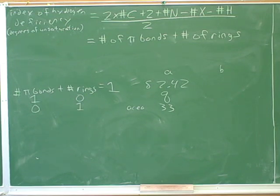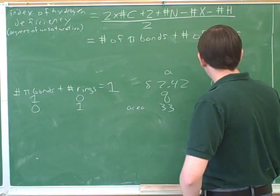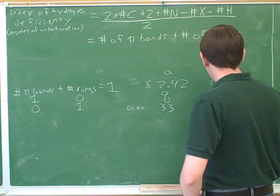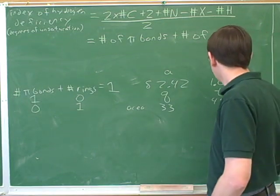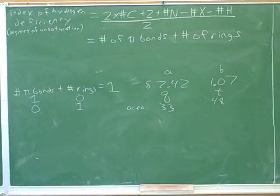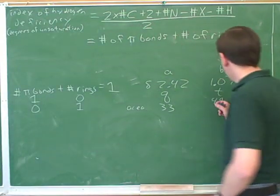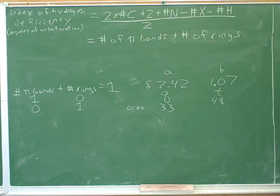So we have a chemical shift of 1.07. It's a triplet. And its integration is 48. 48? Yes. Yeah, that's right. That is, that peak has an area of 48. Okay.